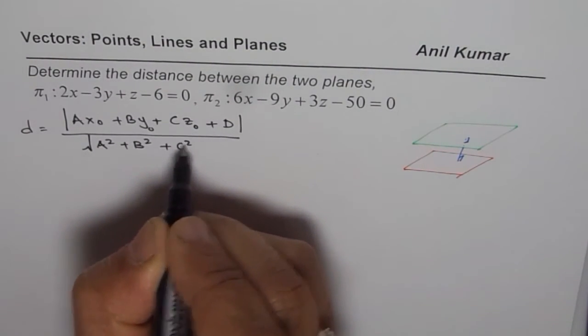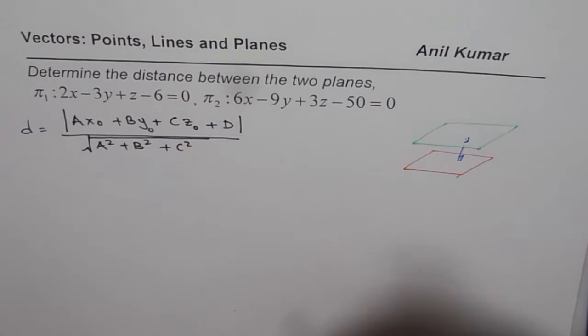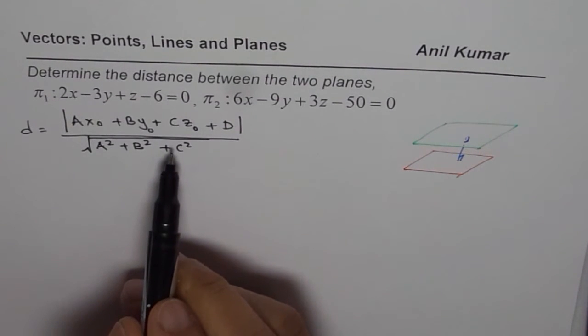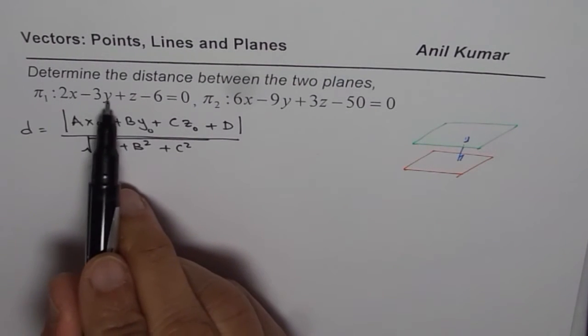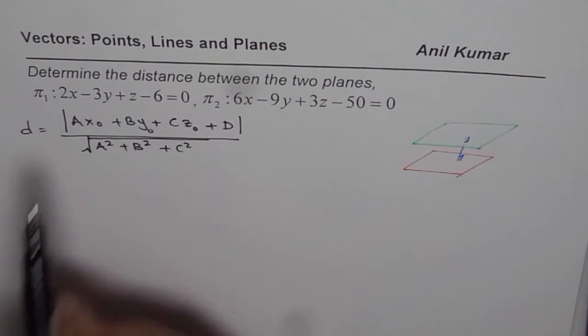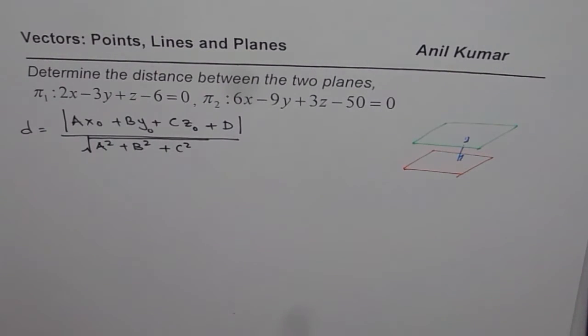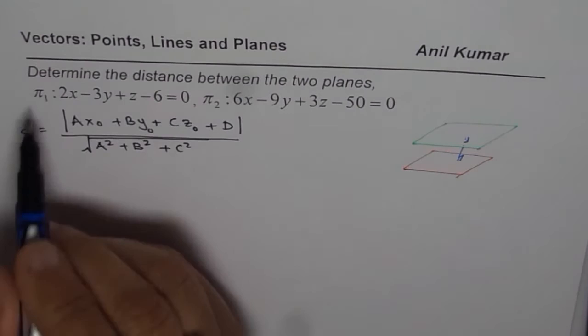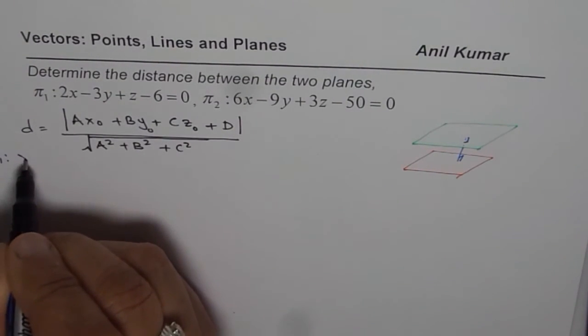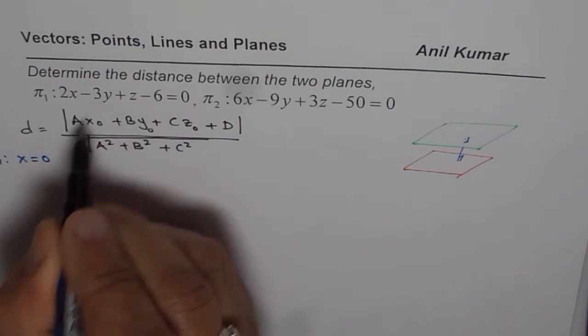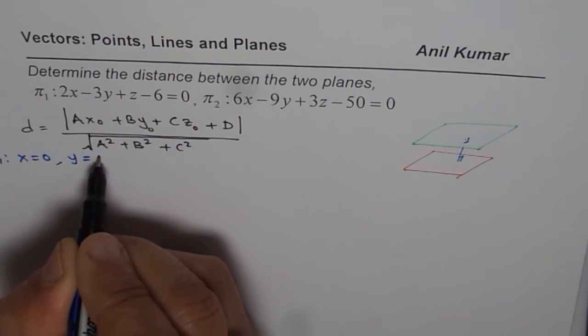What we can do, we can actually substitute 0 for x and y and find z. So first equation is better to use. So from the first equation we can find that from the first equation π₁ if I substitute x = 0 and y = 0 then we get the value of z.